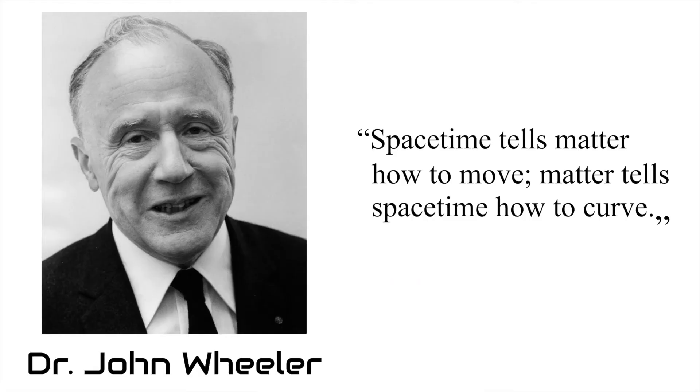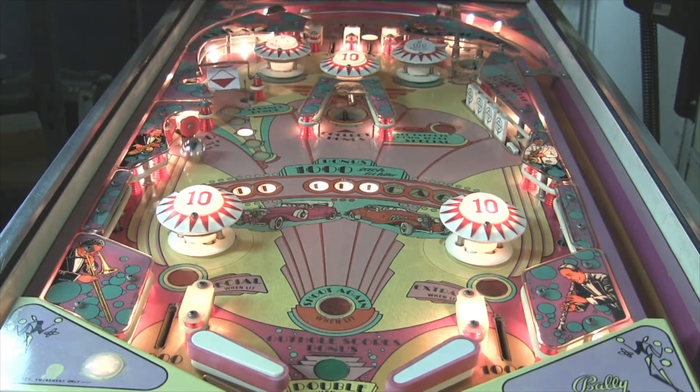Noticing this fact, and the seeming correspondence between electrons and time-reversed positrons, physicist John Wheeler proposed the one electron universe, arguing that every electron in the universe, as well as every positron, was in fact part of the same entity — a single electron whizzing back and forth through time and space like it was stuck in a giant pinball machine. Wheeler first proposed this idea to Richard Feynman in a telephone call in the spring of 1940: "Feynman, I know why all electrons have the same charge and the same mass." "Why?" "Because they are all the same electron."